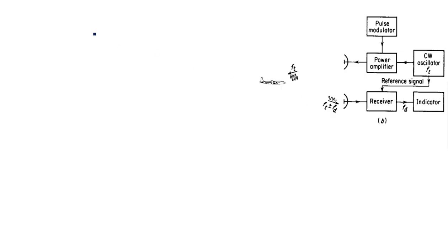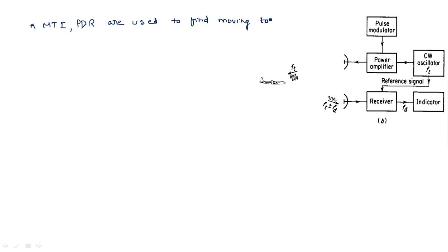In this video I am going to explain about an interesting topic — the butterfly effect, which occurs in MTI and Pulse Doppler radar. MTI and Pulse Doppler radars are used to find or detect moving targets. Stationary targets are not our concern in MTI and Pulse Doppler radar.